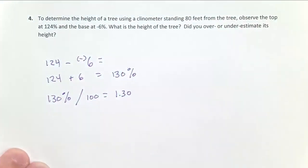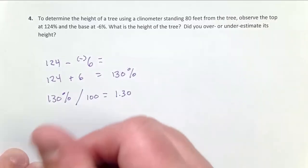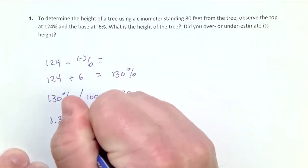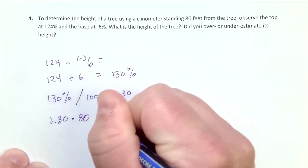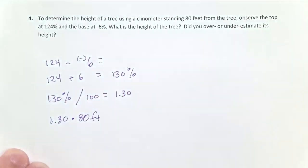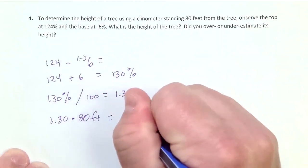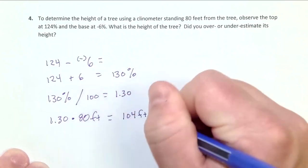Now we've walked 80 feet away from the tree. What this is telling me is that tree is 130 percent of the height that I walked away from. So to do that mathematically, it's now our 1.30 times 80 feet. When you do that, the tree should be 104 feet tall.